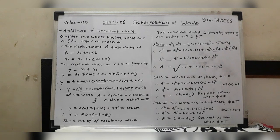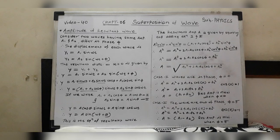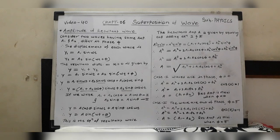When two or more waves arrive at a point simultaneously traveling through the medium, then each wave produces its own displacement, they are independent of each other, and the resultant displacement is equal to the vector sum of the displacements due to the individual waves at that point. Displacement is a vector, so we must add individual displacements considering their direction. There is no change in the shape and nature of the individual waves due to superposition.